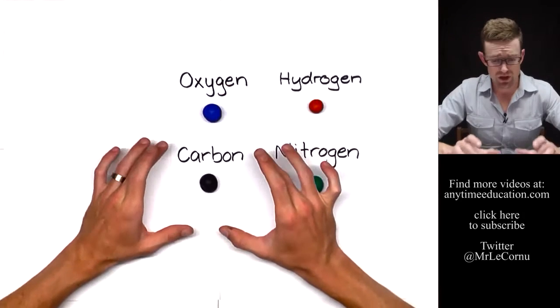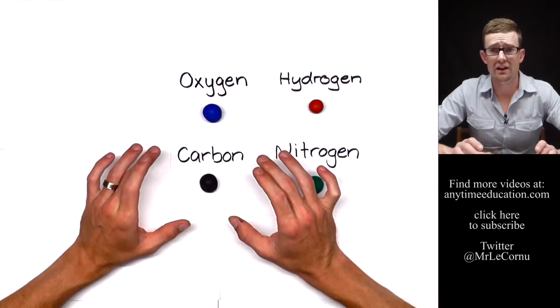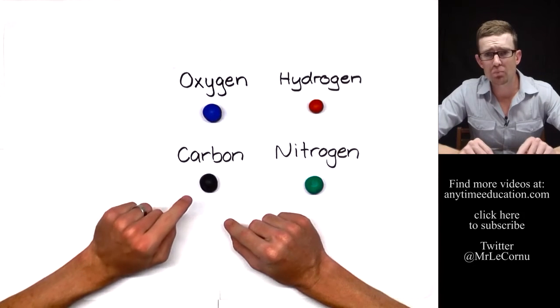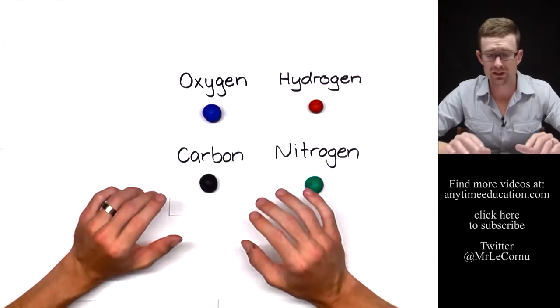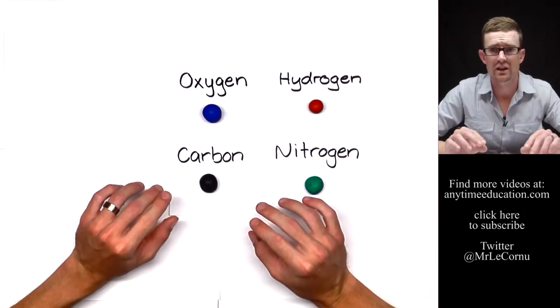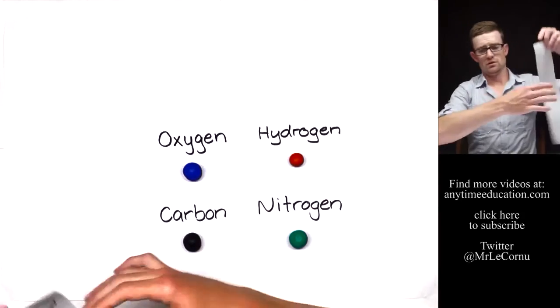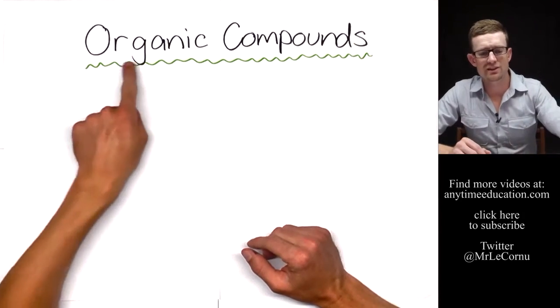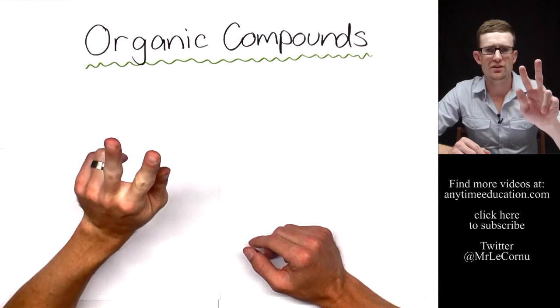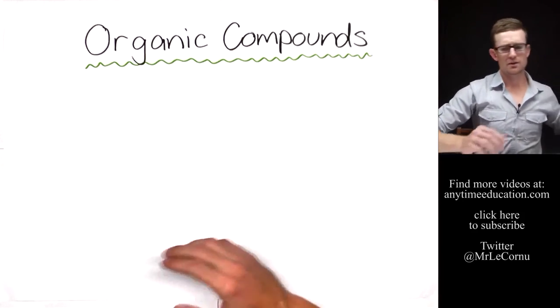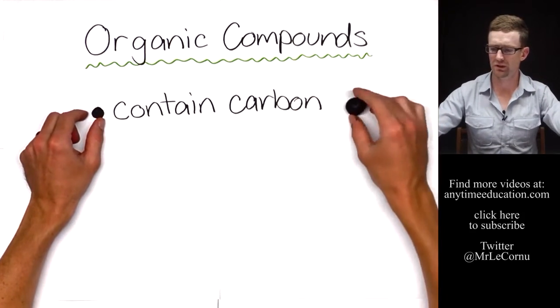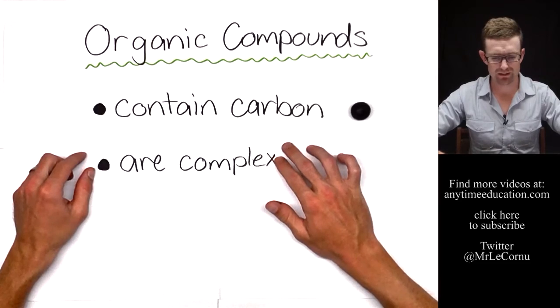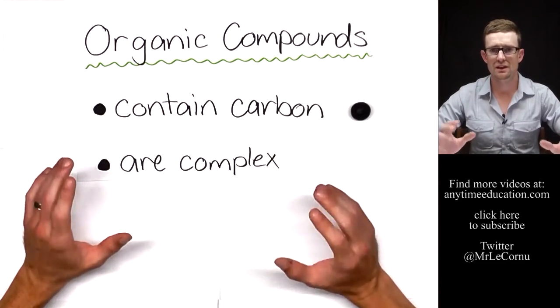Carbon is actually an extraordinary element. It's very good at forming long chains and lattices, and it's found in more compounds than any other element. That brings me to the most important type of compounds in biology: organic compounds. You can tell whether a compound is organic using three key criteria. An organic compound must contain carbon. All organic compounds are complex, they're not simple molecules.